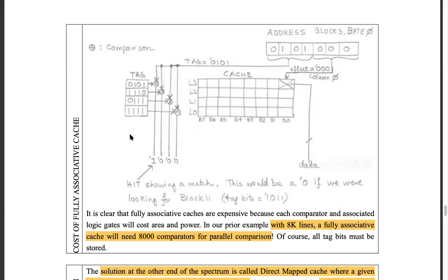If you have cache lines L0, L1, L2, L3, those are the four possible remainders when you divide anything by 4. To map block number 15: 15 modulo 4 = 3, so it can only go into line 3. Block number 7: 7 modulo 4 = 3, so it also goes to line 3. If something is already sitting at line 3, it needs to be removed — that's the demerit of direct mapping. But the benefit is you already know the destination uniquely.